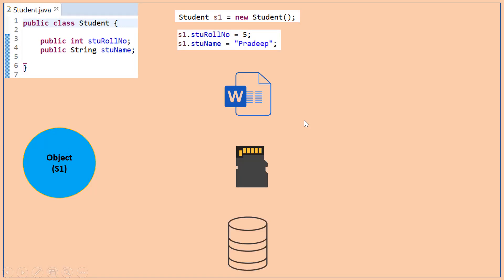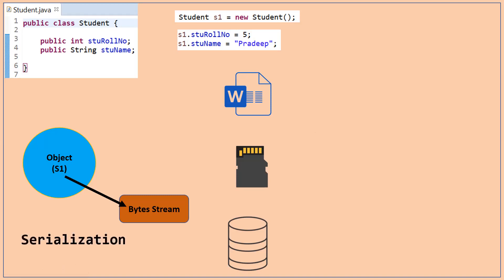Now we want to save this s1 object in a file, memory, or database. To save the object in any of these places, we first have to convert it into a byte stream. So the process of converting the object into the byte stream is known as serialization. Once the object is serialized and converted into the byte stream, we can save the data in a file, memory, or database.